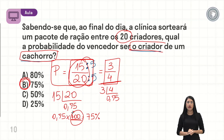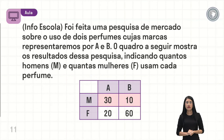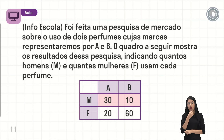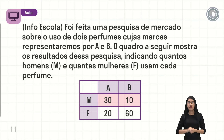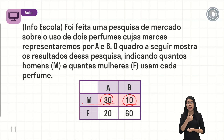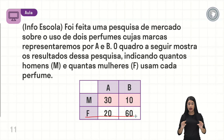Continuando, vamos ver um próximo exemplo de probabilidade. Foi feita uma pesquisa de mercado sobre o uso de dois perfumes cujas marcas representaremos por A e B. O quadro a seguir mostra os resultados dessa pesquisa, indicando quantos homens (representados pela letra M) e quantas mulheres (representadas pela letra F) usam cada perfume. Na tabela: 30 homens utilizam o perfume A e 10 homens utilizam o perfume B. Já 20 mulheres utilizam o perfume A e 60 mulheres utilizam o perfume B.